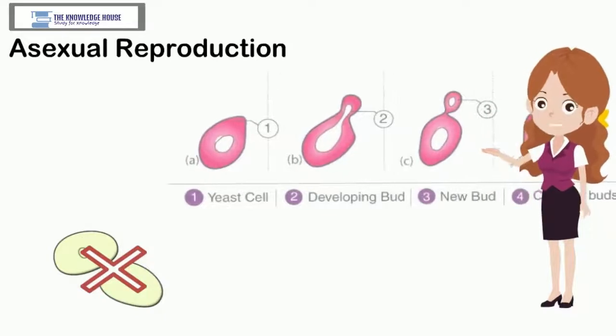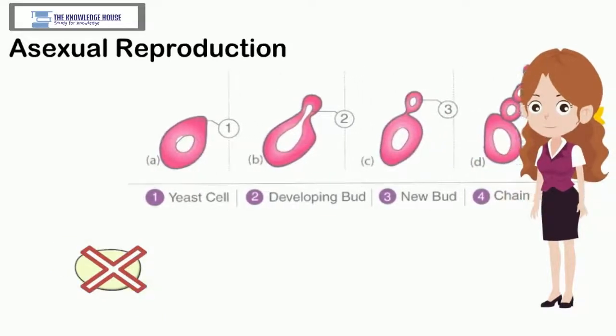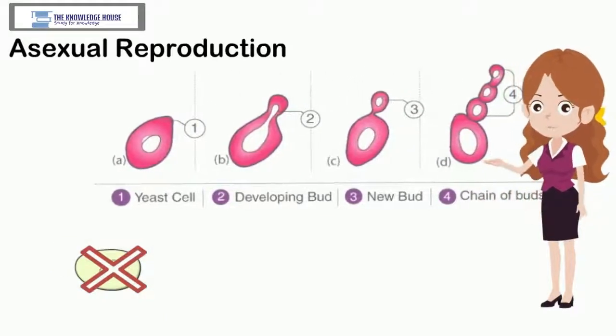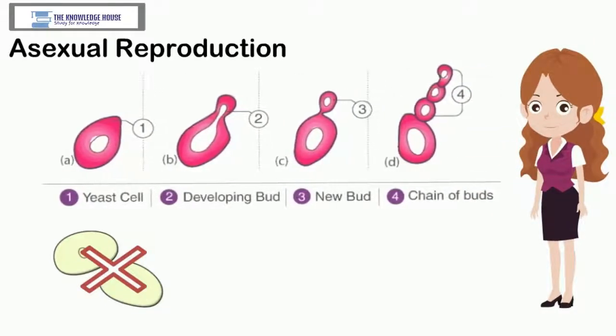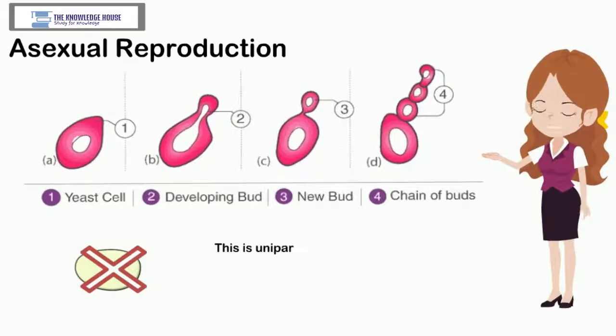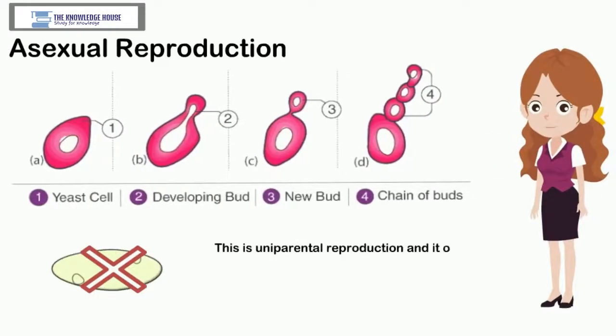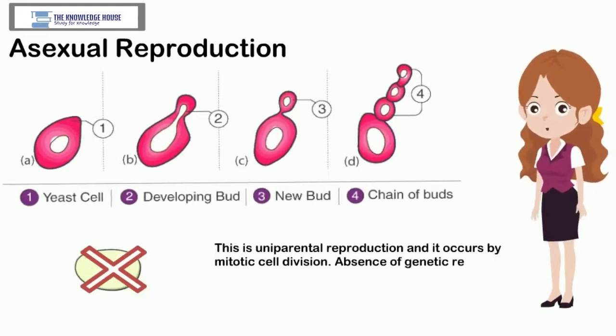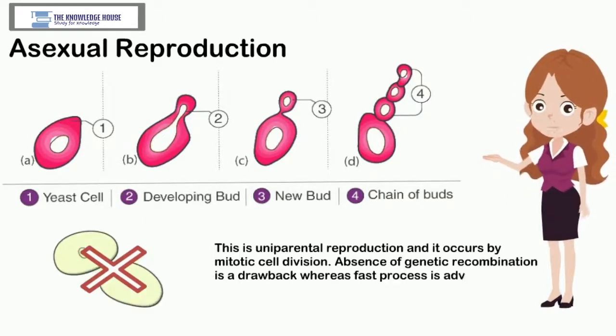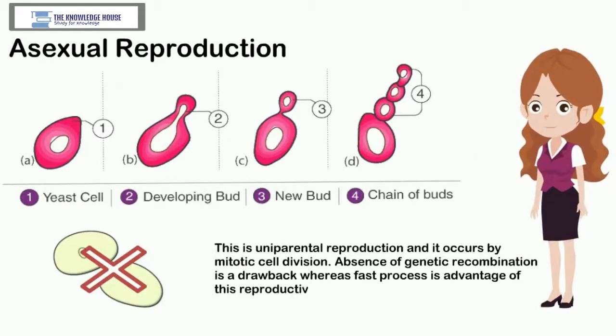As this reproduction does not involve union of two different gametes, the new organism has exact genetic similarity with the reproducing organism. This is uniparental reproduction and it occurs by mitotic cell division. Absence of genetic recombination is a drawback whereas fast process is advantage of this reproductive method.